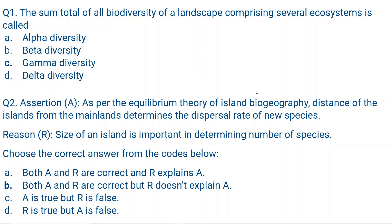Gamma diversity is the sum total of all diversity found in a region or landscape. Now let me explain all the terms. Alpha diversity refers to the number of species in a single ecosystem — how many species are in one ecosystem, that is alpha diversity. Beta diversity is the change in species diversity between ecosystems. In a landscape with multiple ecosystems, the change in biodiversity from one ecosystem to another — that number of changes is called beta diversity.